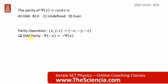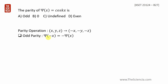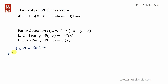There are two types of parity: odd parity and even parity. For even parity, ψ(−x) = +ψ(x). For odd parity, ψ(−x) = −ψ(x). For ψ(x) = cos(kx): ψ(−x) = cos(k·(−x)) = cos(−kx) = cos(kx), which equals ψ(x).